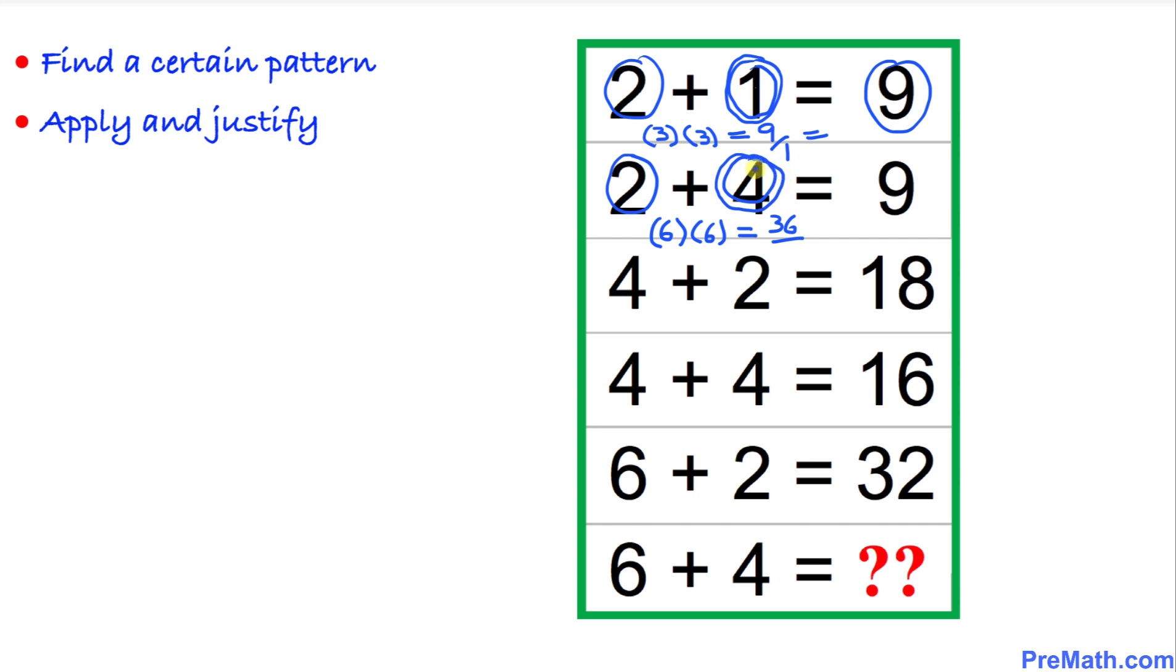Likewise, let's do the same thing with this third row: 4 plus 2 is going to be 6, and then we are going to multiply 6 times 6, that's 36. Then divide by this second number which is 2, and that is going to give us 18.